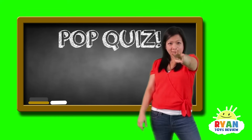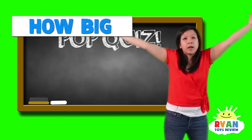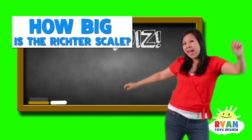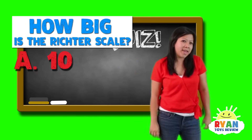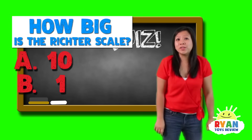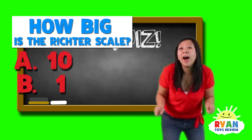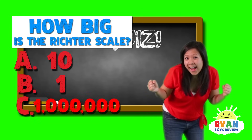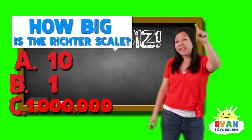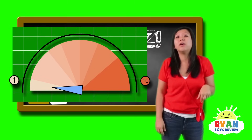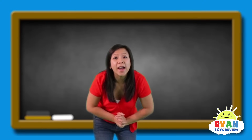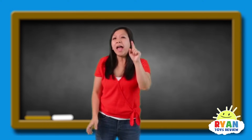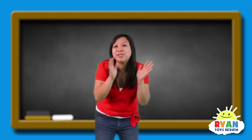Final question, number three: How big does the Richter scale go? A — 10. B — 1. Or C — One million! That's right! The answer is A, which is 10. The Richter scale goes from one all the way to 10. Good job! You guys answered all the questions correctly. And if you didn't, it's okay — just try again. Good job, thank you for trying.